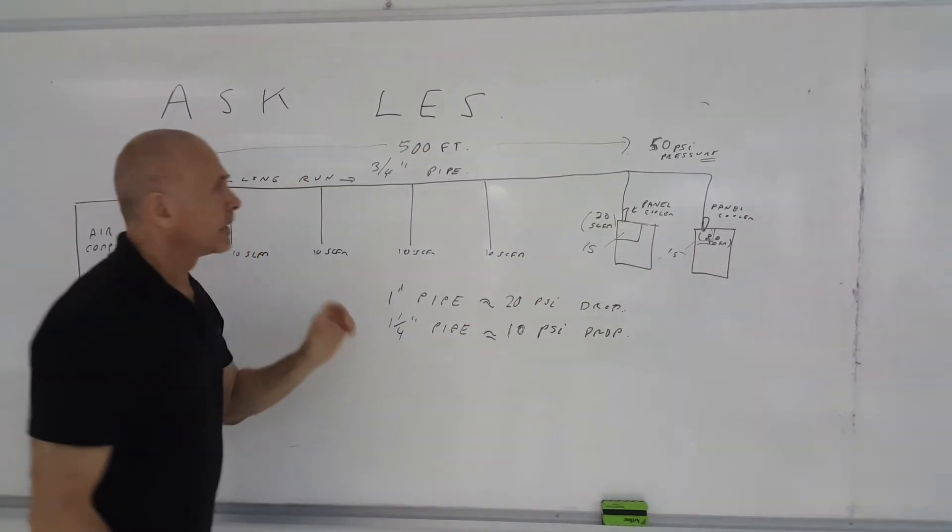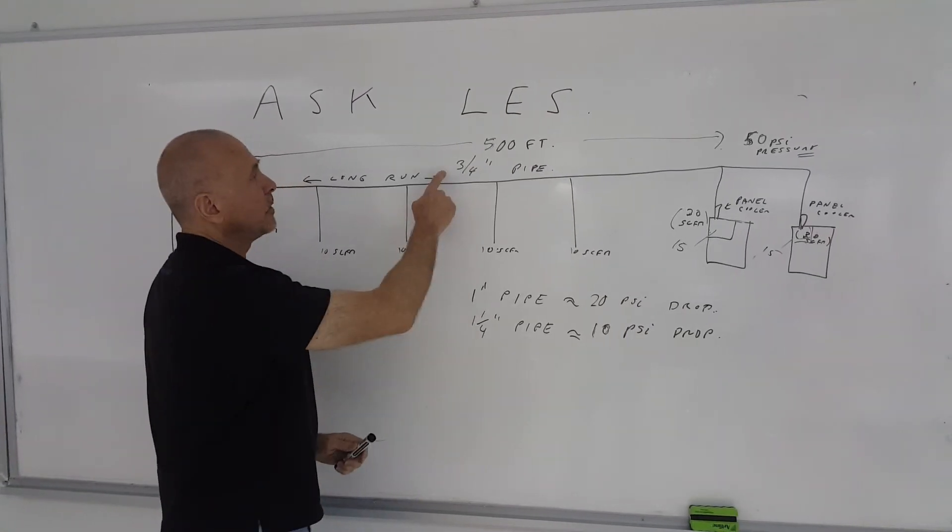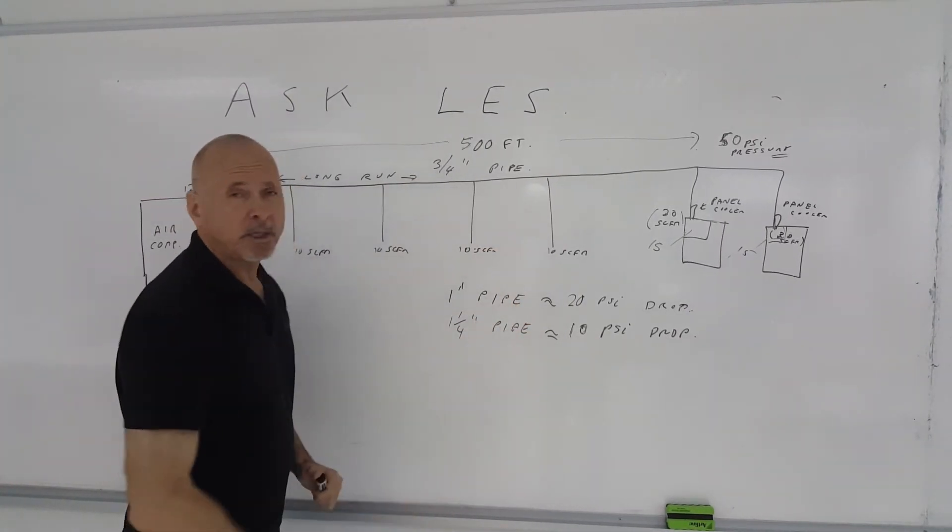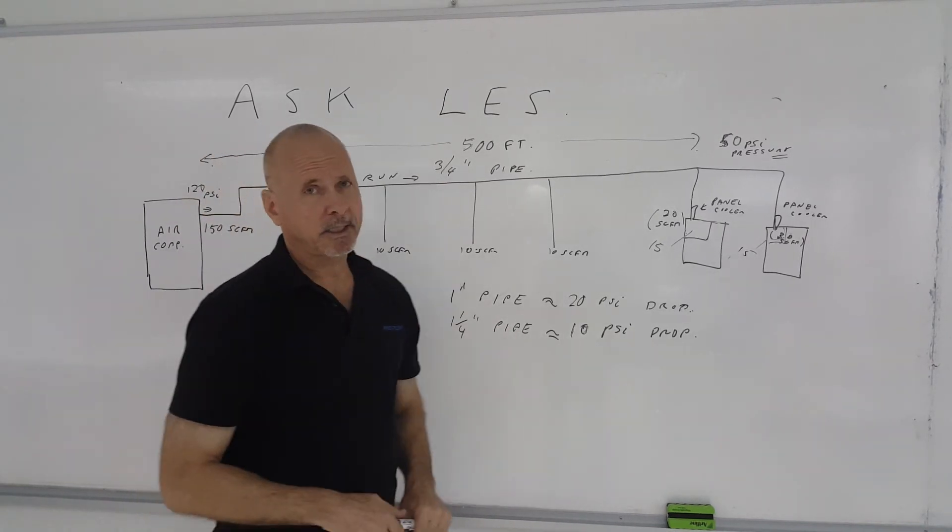So, you have to look at the system. Now, imagine if they had a one-inch pipe instead of three-quarter inch, that 50 PSI pressure drop would only be about 20 PSI. If it was one and a quarter inch pipe, it would only be a 10 PSI drop.